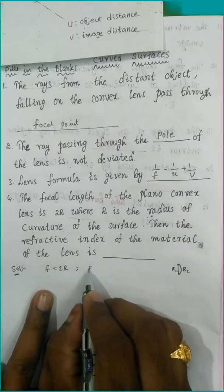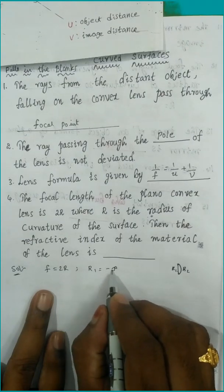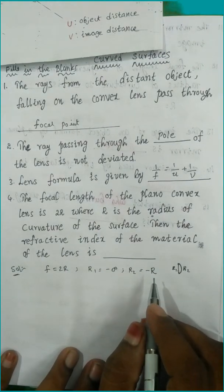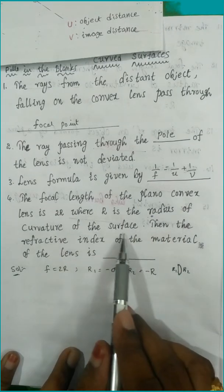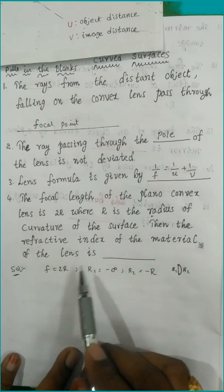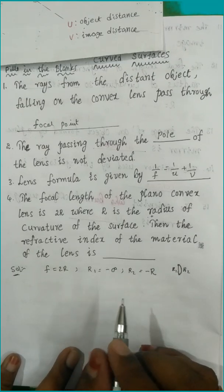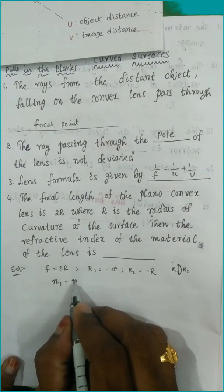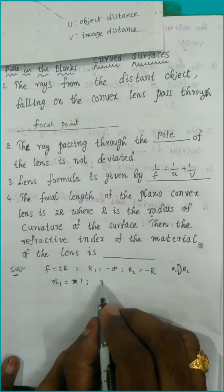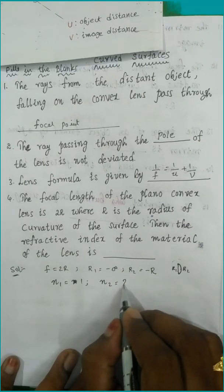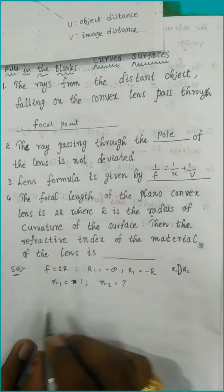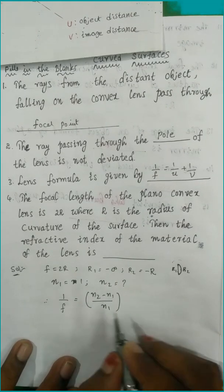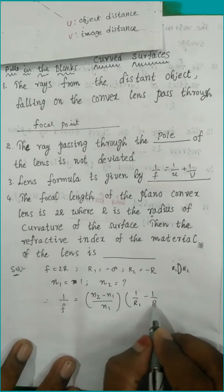For the plano-convex lens, R1 equals negative infinity and R2 equals 2R. There are two mediums: the surrounding medium is air, so n1 = 1, and n2 is the refractive index of the lens material, which we need to find. The lens maker's formula is: 1/f = (n2 − n1)/n1 × (1/R1 − 1/R2).